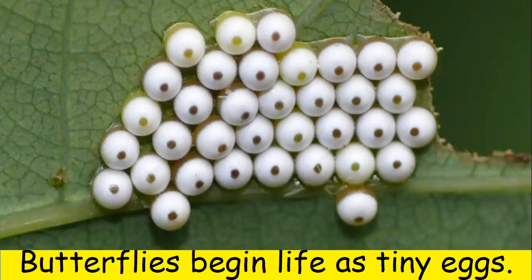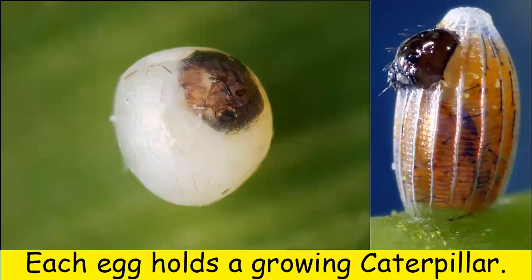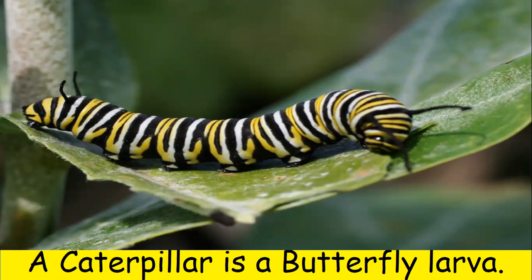Butterflies begin life as tiny eggs. These eggs are stuck to leaves. Each egg holds a growing caterpillar. A caterpillar is a butterfly larva. Larva is what we call the insect that hatches from the egg, and a caterpillar is the larva for a butterfly.